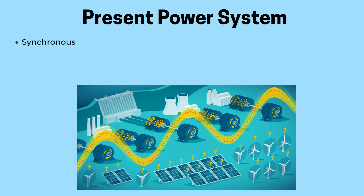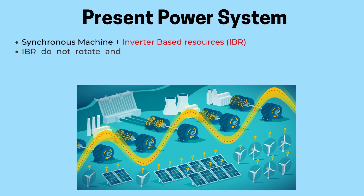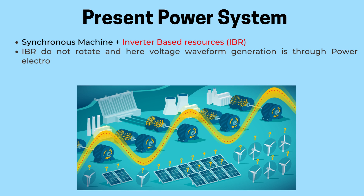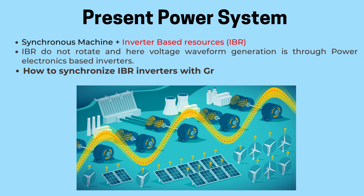The present power system includes both synchronous machines and inverter-based resources, IBR. The process of synchronization becomes a bit different for IBR compared to traditional synchronous machines, since IBRs such as solar or wind inverters do not have rotating parts. The question is: how are IBRs, which are DC power dominant, synchronized with the AC power system? Let us learn about the phase-locked loop, or PLL, which is the control mechanism through which IBRs are synchronized with the AC power system.